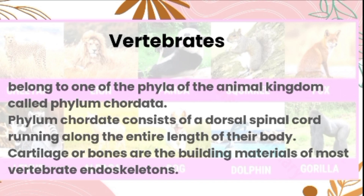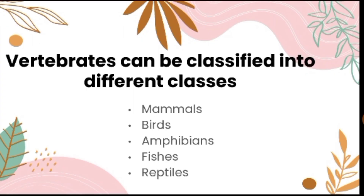Cartilage or bones are the building materials of most vertebrate endoskeletons. Vertebrates can be classified into different classes. We have mammals, birds, amphibians, fishes, and reptiles. Let us now discuss all of those.